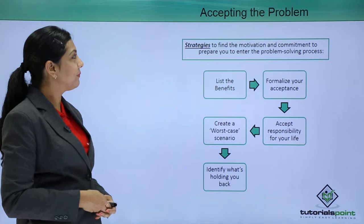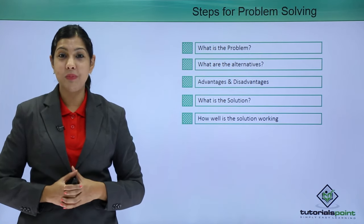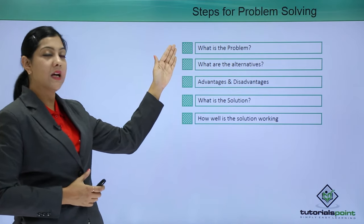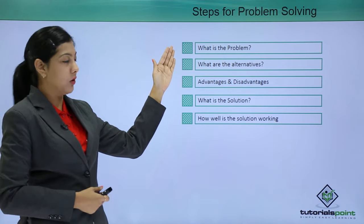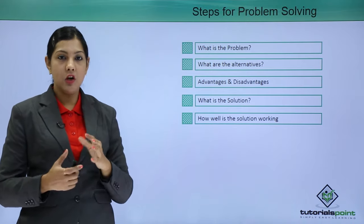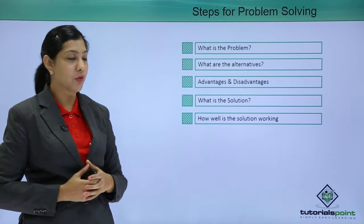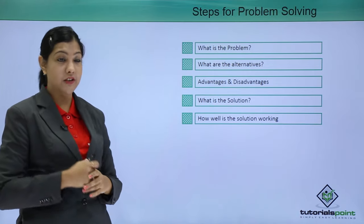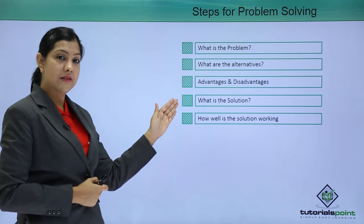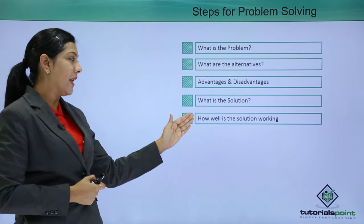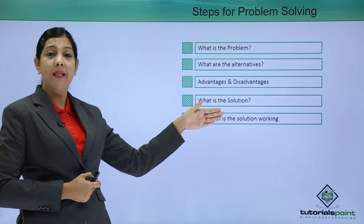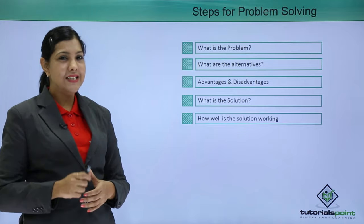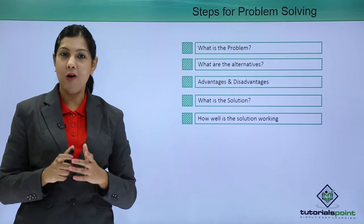Now let's get into the steps of problem-solving. There are certain steps: first, understand what the problem is; second, identify certain alternatives; third, evaluate the advantages and disadvantages of each alternative; fourth, determine what the solution is; and fifth, assess how well the solution is really working. In the last step we actually come to know whether a problem has been solved or not. Let's understand each step in detail.